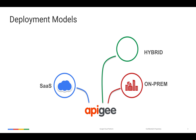Apigee also has a hybrid option where the core runtime will be on your data centers, and you will be leveraging the cloud for various features like managing APIs, creating API products, viewing analytics, as well as onboarding your developers and partners into your API program.